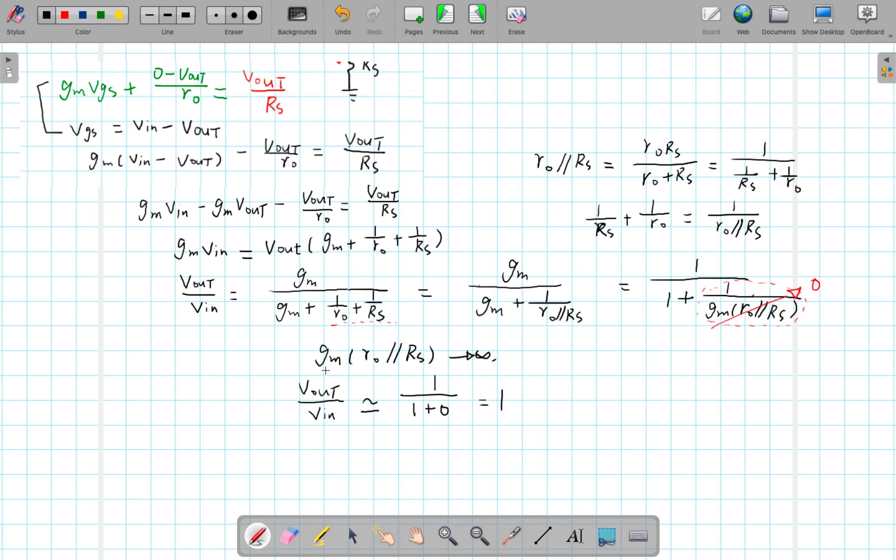In fact, this relationship, this is not an unreasonable assumption because gm represents the amplification. It's supposed to be large. R0 is large and Rs is large. So gm, a large quantity times a large quantity, it's not unreasonable to assume that it is large.